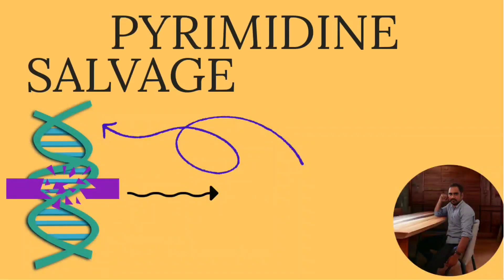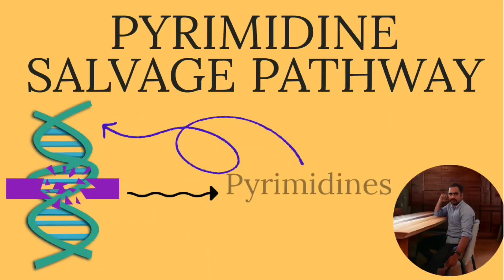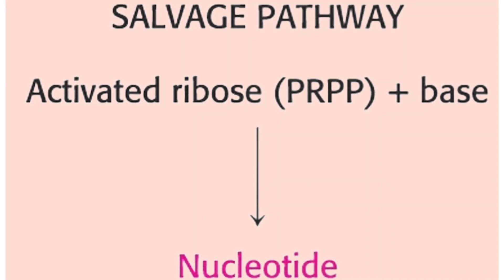Pyrimidine salvage pathway. Let us see first what is salvage pathway. In salvage pathway, a base — it may be a purine or pyrimidine — is reattached to an activated ribose.